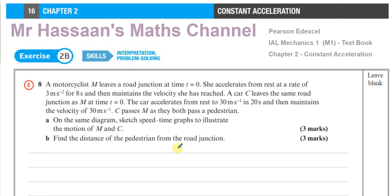This question is about a motorcyclist M leaving a road junction at time t equals 0. She accelerates from rest at a rate of 3 meters per second squared for 8 seconds and then maintains the velocity she has reached. A car C leaves the same road junction at t equals 0, and accelerates from rest to 30 meters per second in 20 seconds, then maintains that velocity.